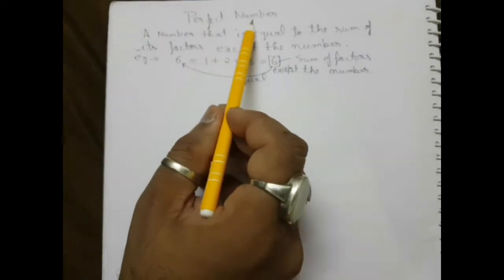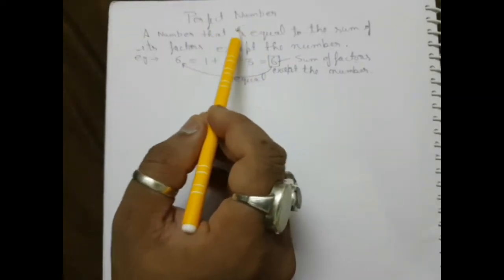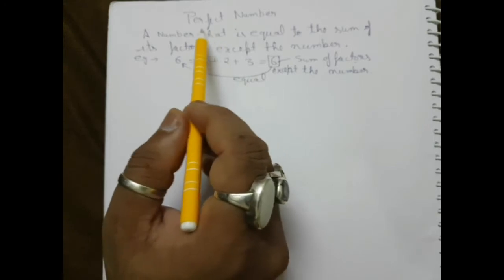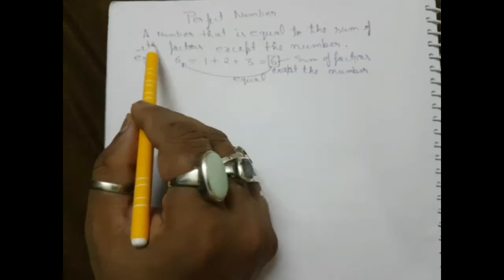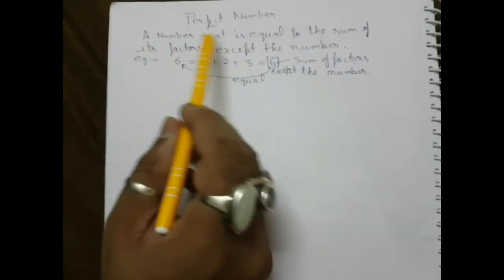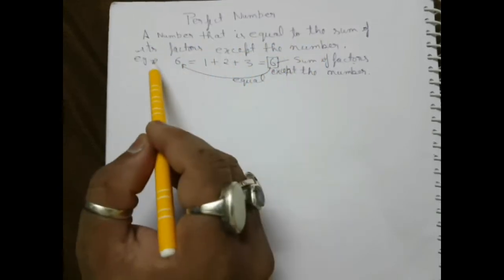Students, in this video I'm going to discuss the perfect number program. Before that, I want you all to like, subscribe and share this video. A perfect number in Java is a number that is equal to the sum of its factors except the number itself.